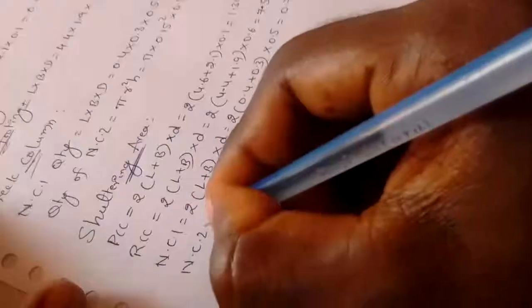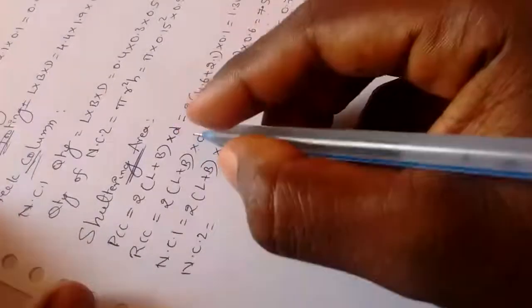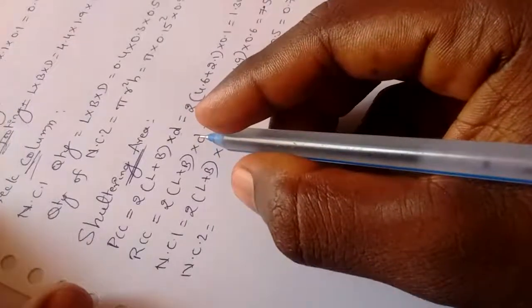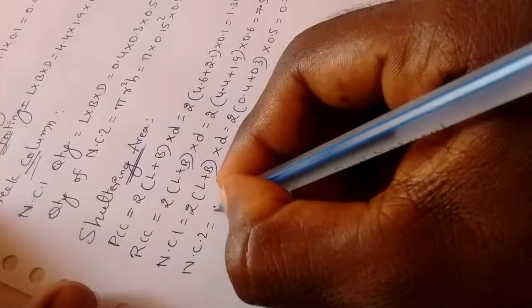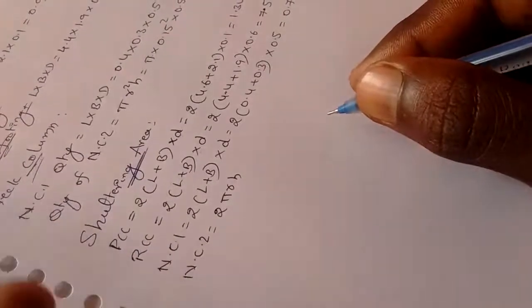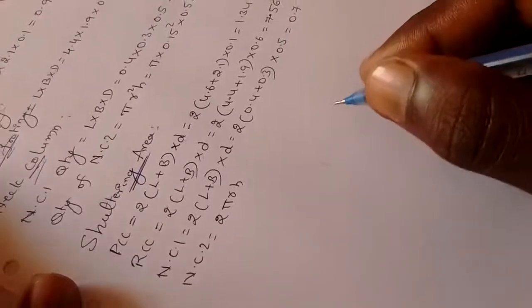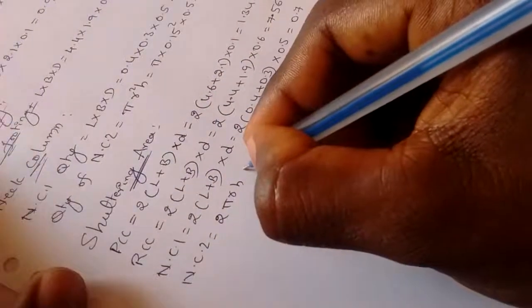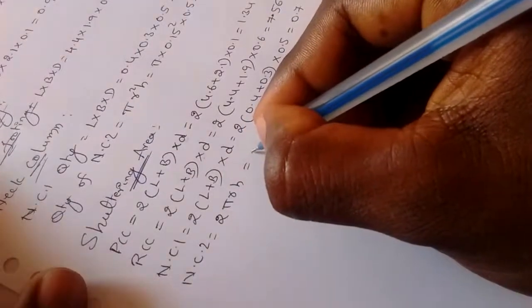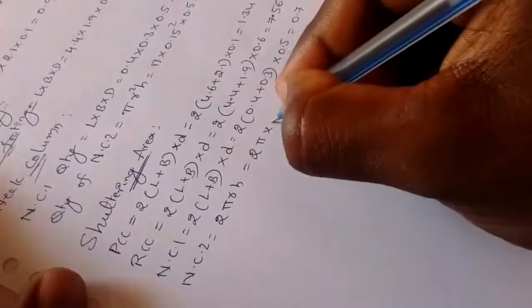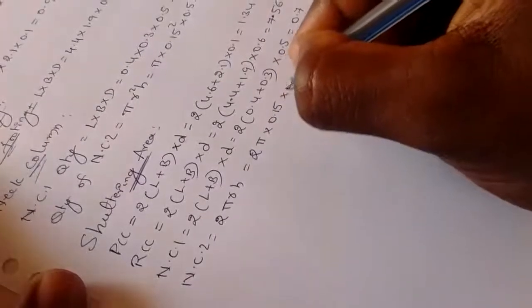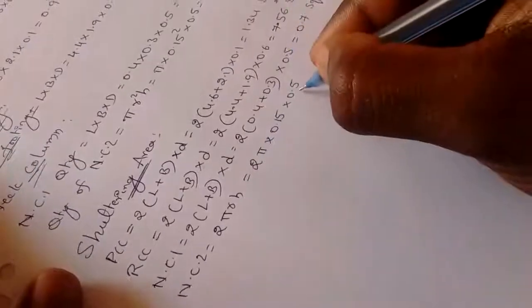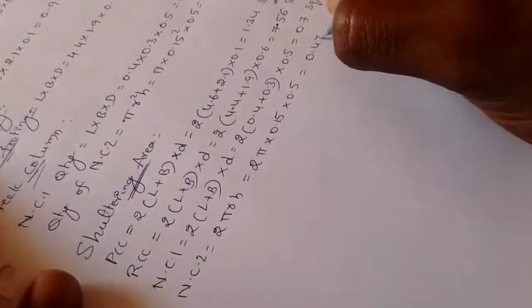Next is neck column 2. The shuttering area formula for neck column 2 is 2πRH, since it is a circular column. Substituting values: 2 into π into R equals 0.5 meters, height (depth) of column is 0.5 meters. Total shuttering area is 0.47 square meters.